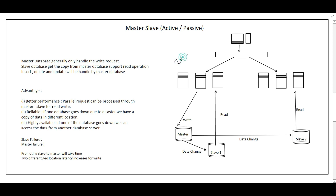For example, suppose data center DC1 is in Pune and data center DC2 is in Mumbai. Read requests coming from Pune will be served by slave 1, and read requests coming from Mumbai will be served by slave 2.